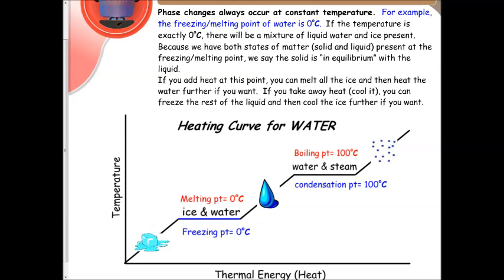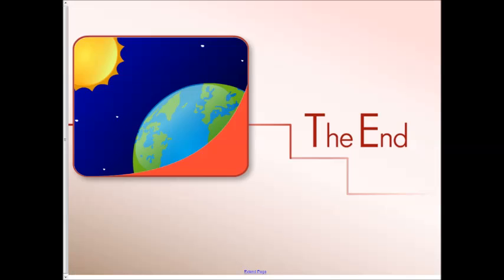Now if we add heat at this point, you can melt all the ice and then heat the water further if you want. At the same time, if you take away heat, meaning keep cooling it down, you will freeze the rest of the liquid, then you can cool the ice down further. But at that equilibrium, there's no temperature change. All right, that completes our thermochemistry unit.